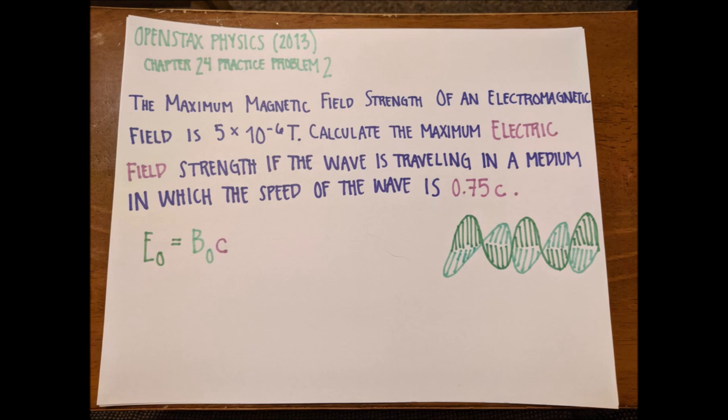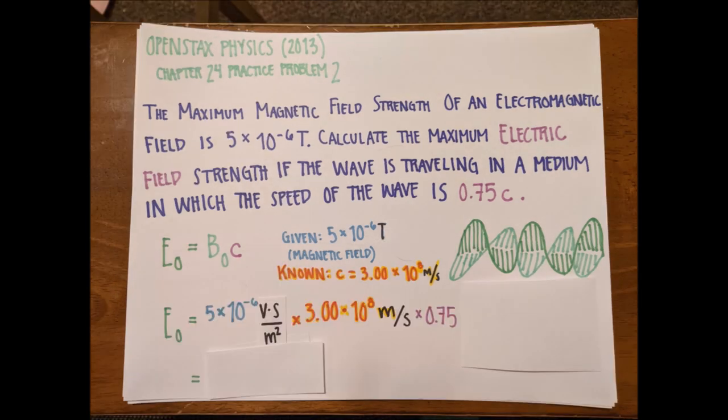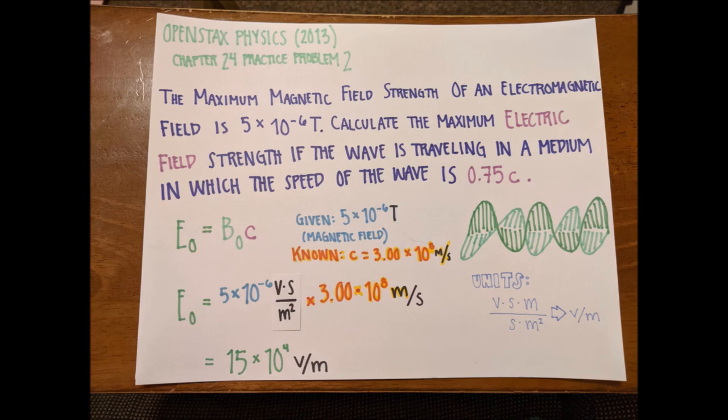So we're given that the maximum magnetic field strength is 5 times 10 to the negative 6 teslas. We know that the constant for c is 3.00 times 10 to the 8 meters per second, and so we can plug that in. Now don't be confused - I'm not trying to trick you or anything like that. Teslas are just equal to volts times second per meter squared, and I wanted to write it out in that form so that we can understand what's going on with our units. So you can see on the right, to prove I'm not lying to you, that it's volt times second times meters divided by seconds times meters squared, which simplifies to volts per meter, which is exactly what we want for electromagnetic fields.